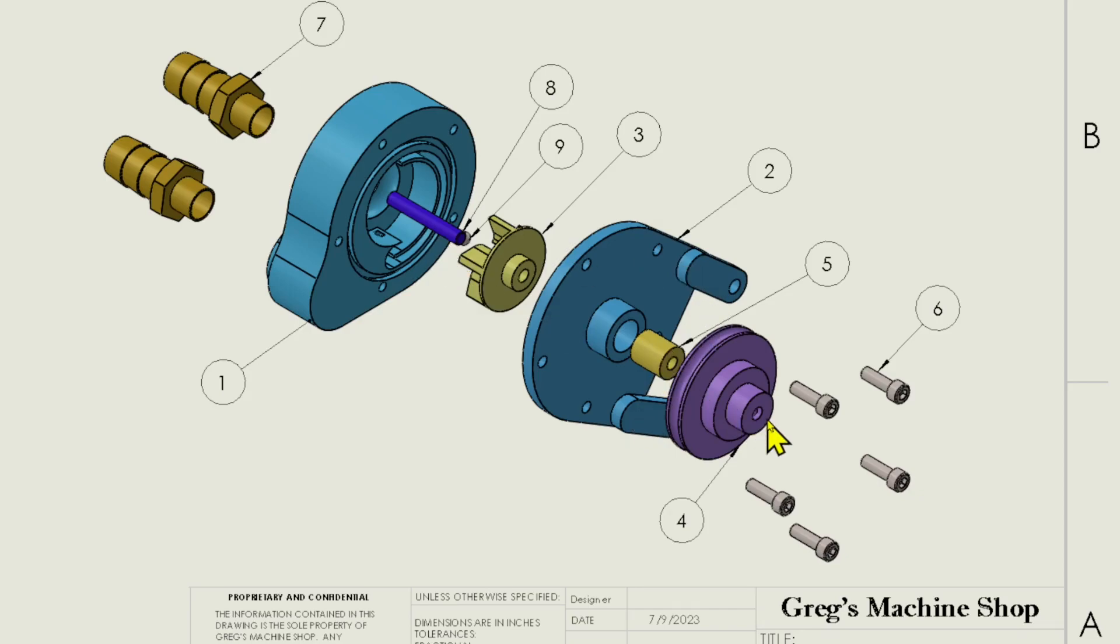The shaft passes through our pulley, which is secured by a set screw. The whole assembly is screwed together with these 440 socket head cap screws.